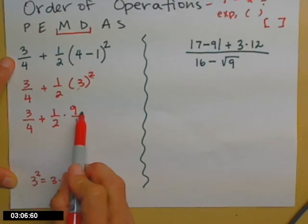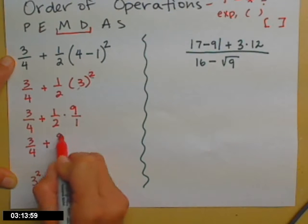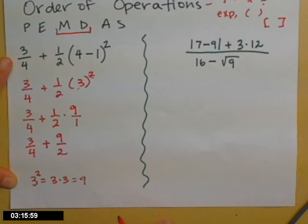Multiplying fractions, we multiply across the top, we multiply across the bottom. The 3/4 I haven't done anything with yet. So now I have 3/4 + 9/2.